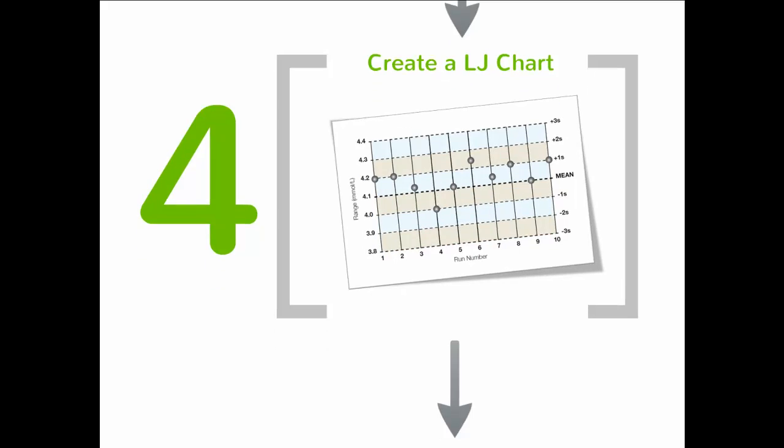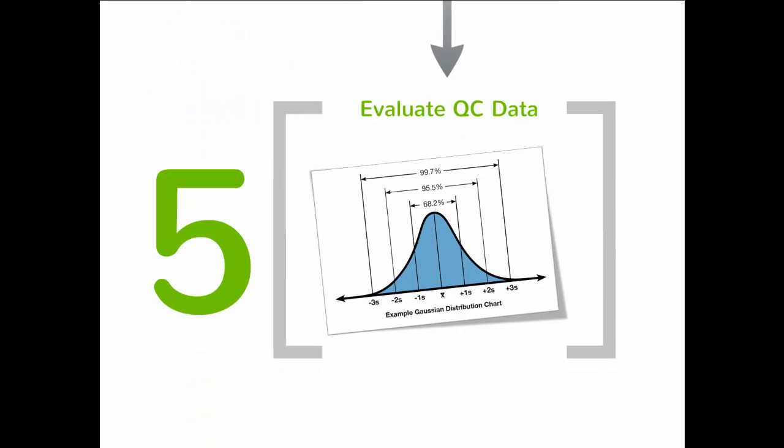Finally, evaluate the QC data. When an analytical process is in control, the QC data will fall in a distribution with approximately 99.7% of the results falling within the plus or minus 3s limits. QC results that are outside the 3s limits are generally considered out of control and the run should be rejected.